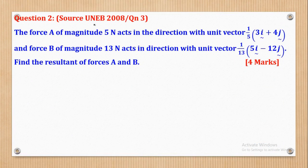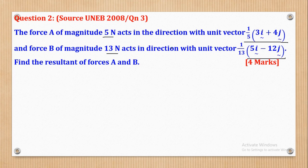Now we shall go to question 2. Question 2 came from UNEP 2008, question 3. It says: force A of magnitude 5 Newtons acts in the direction with unit vector (1/5)(3i + 4j), and force B of magnitude 13 Newtons acts in the direction with unit vector (1/13)(5i − 12j). Find the resultant of forces A and B.